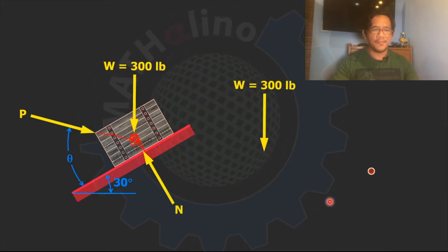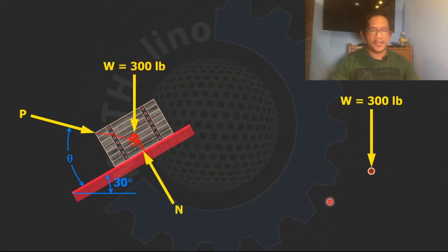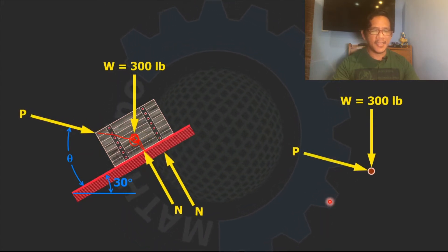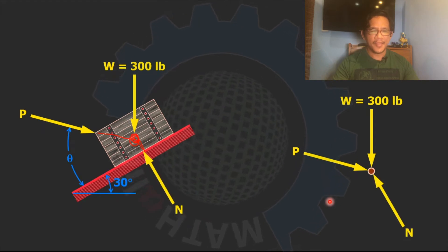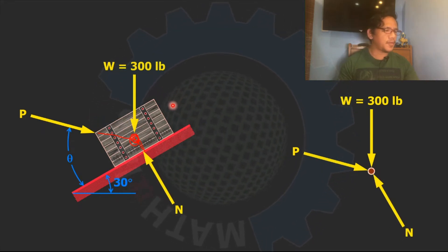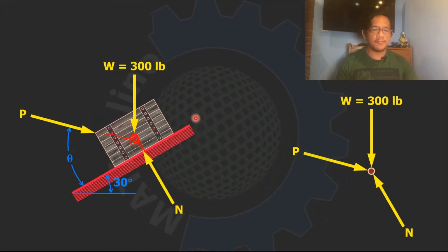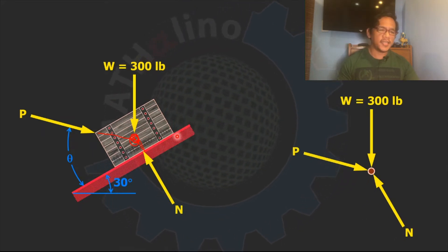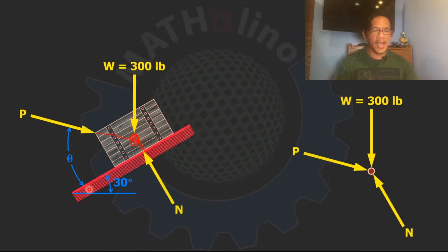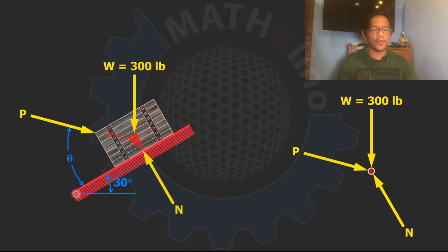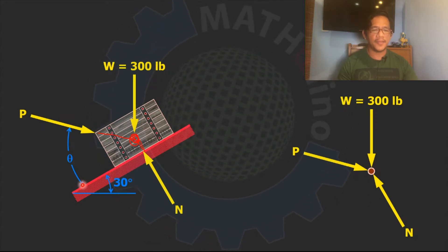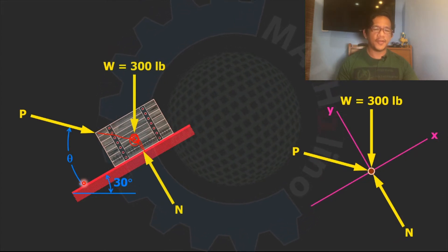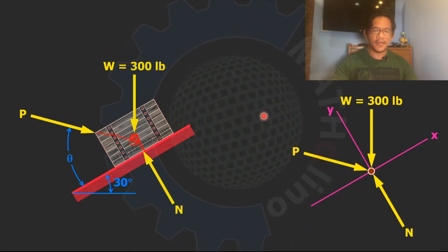This is the 300-pound weight, this is P, and this is N. The best way to solve this problem is by the component method. We need a coordinate axis such that one of its axes is parallel or coincident with the incline. This is our XY plane, our coordinate axis. So this is our angle theta.